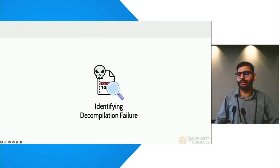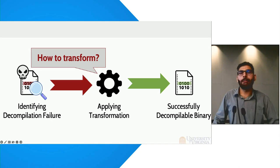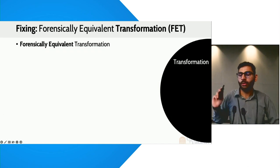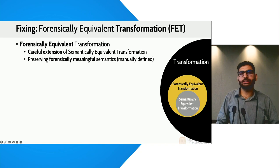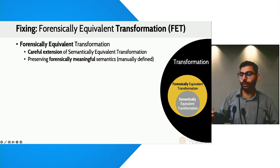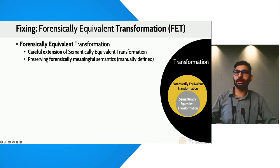Now after identifying, we can move on to fixing. We fix these binaries by applying transformation. We do all of that using forensically equivalent transformations, or FETs. FETs are an extension of semantically equivalent transformations, or SETs. The goal is to transform or relax semantics while preserving forensically meaningful information. We need FETs because semantically equivalent transformations would not always remove the error, so we had to relax the semantics while still preserving forensically meaningful information.